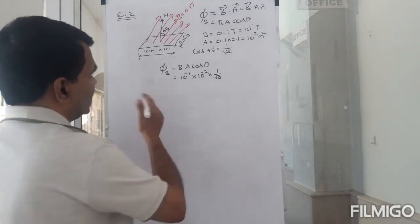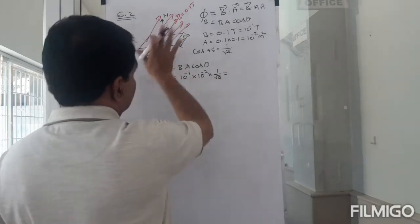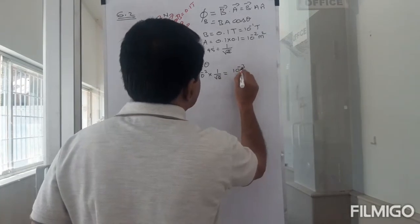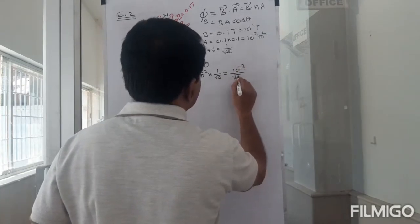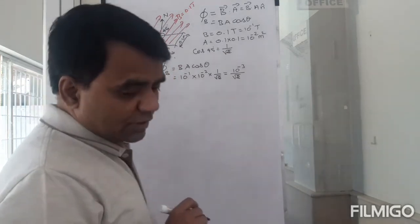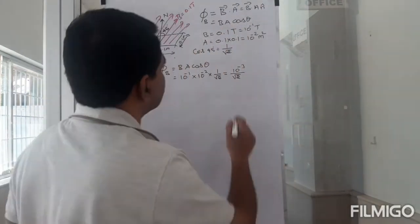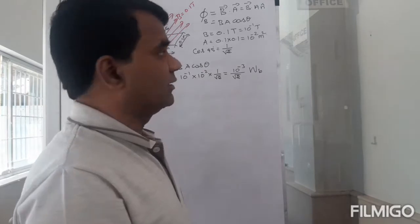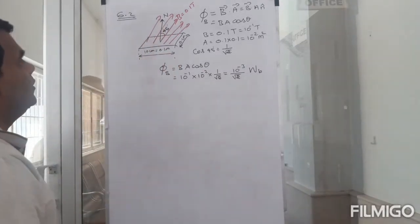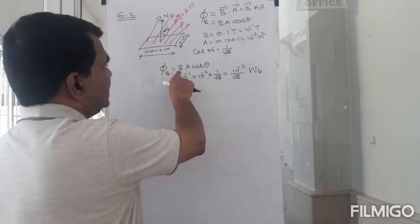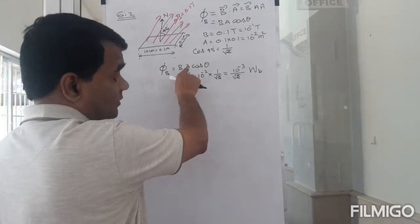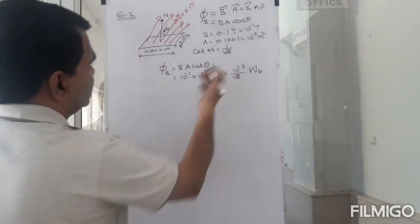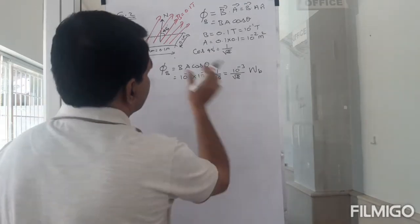So the initial flux is Φ_B = 10⁻³/√2 weber. Since the flux is changing at a constant rate, the instantaneous rate of change equals the average rate of change.